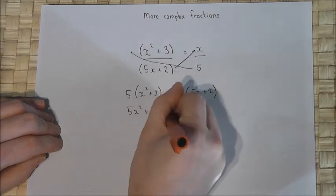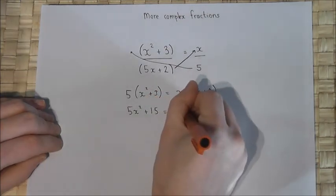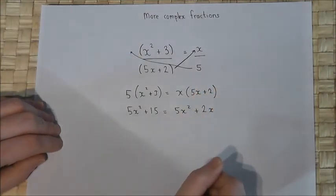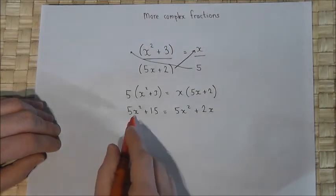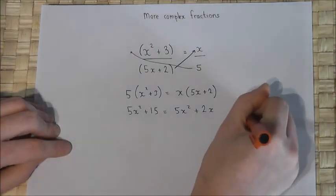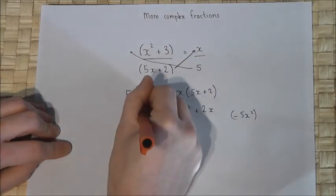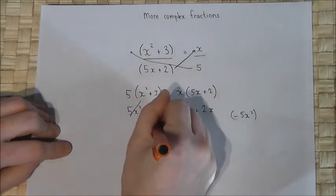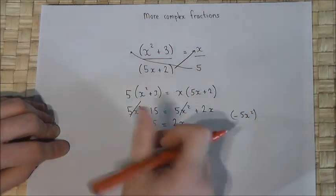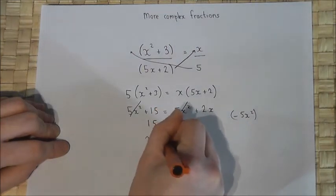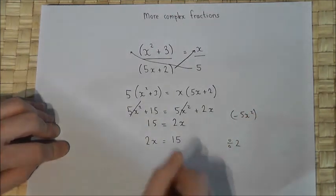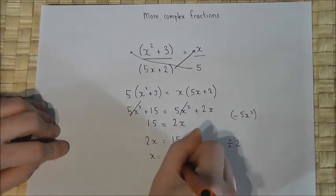Continuing the expansion: x times 5x is 5x squared, x times 2 is 2x. Now I observe that both sides have a 5x squared term, so subtracting 5x squared from both sides cancels those terms. I'm left with 15 equals 2x. Rewriting: 2x equals 15, then dividing by 2 gives x equals 15 over 2.